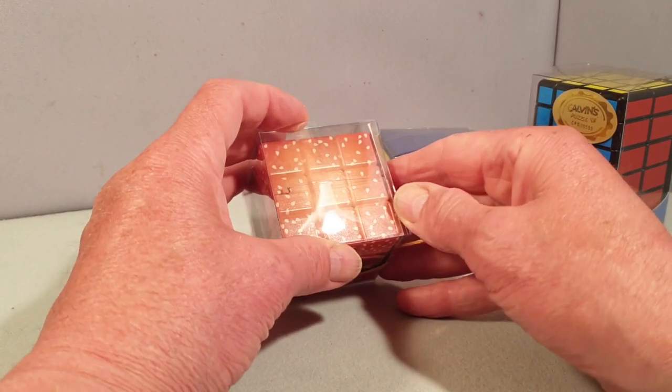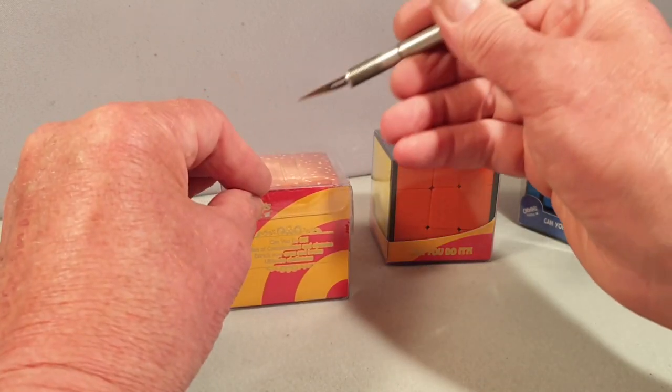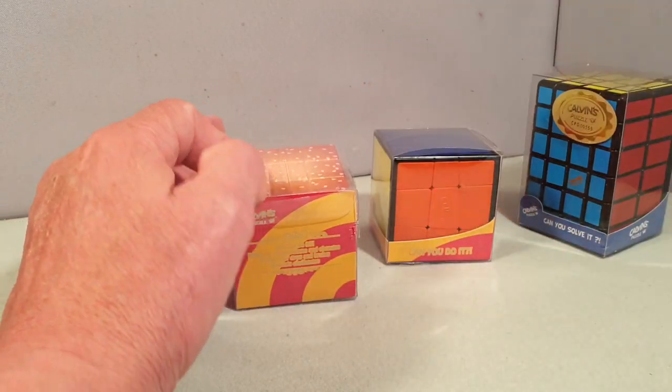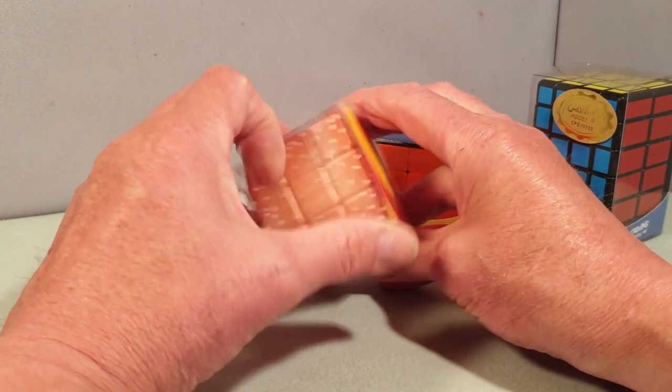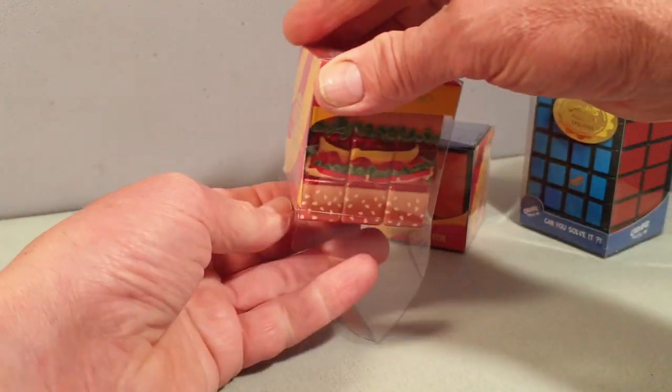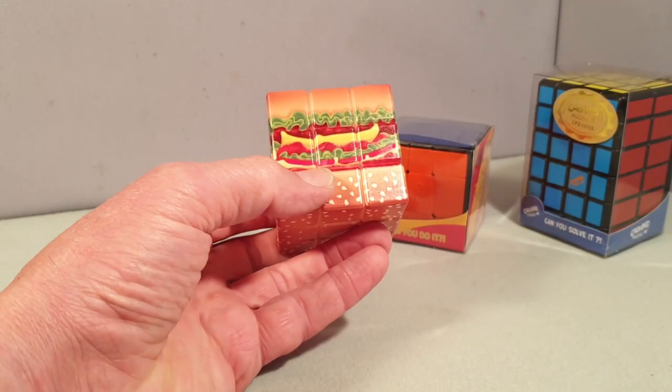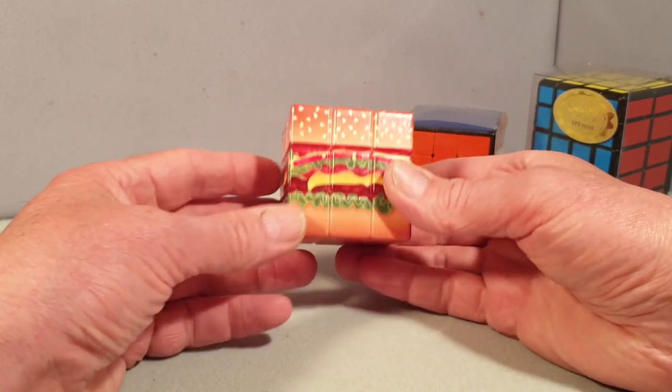This is called the Yummy Cheese Hamburger 3x3x3 cube and it's part of the Hungry collection. I love the way Chinese attempts to name things in English usually fail dismally. Or maybe they just haven't heard of cheeseburgers.